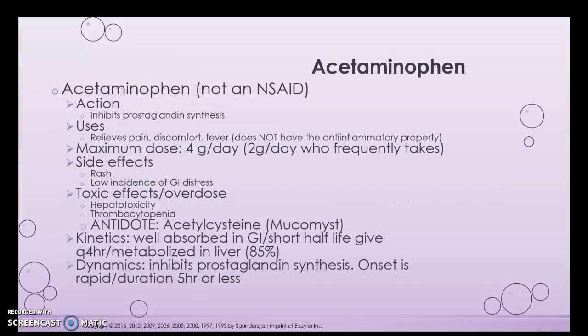Acetaminophen is not an NSAID, though we discussed it in the previous video. It inhibits prostaglandin synthesis and we use it to relieve pain and for fever. It can be toxic to the liver, and patients can overdose on it. Mucomyst is the antidote for acetaminophen overdose — it's important to know that, especially if you work in an ER caring for overdose patients.